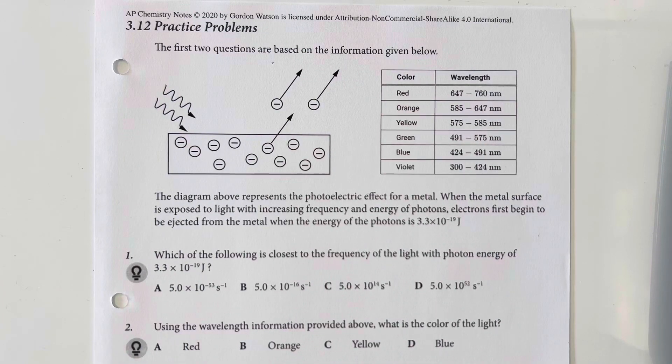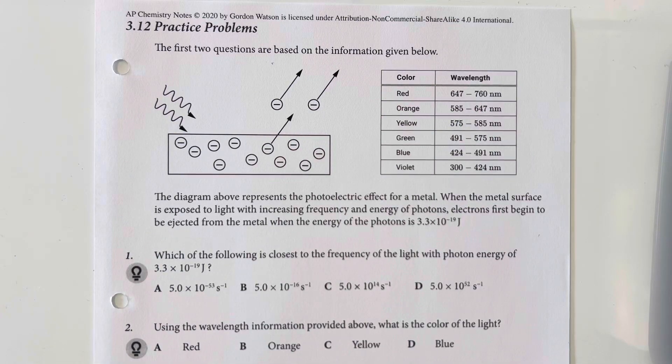Which of the following is closest to the frequency of the light for the photon energy of 3.3 times 10 to the negative 19th joules?